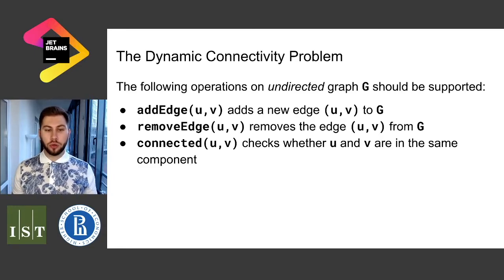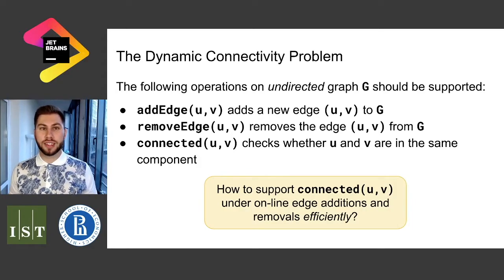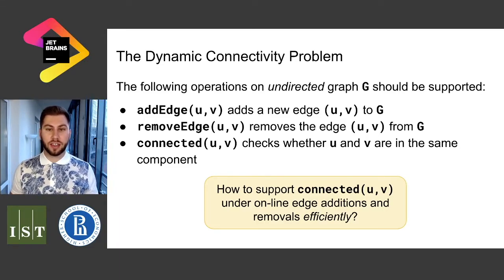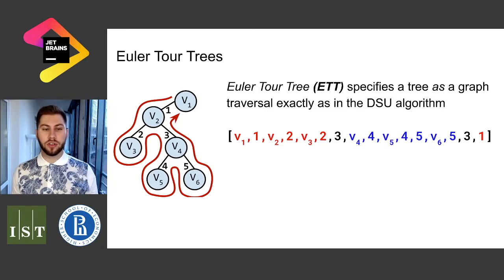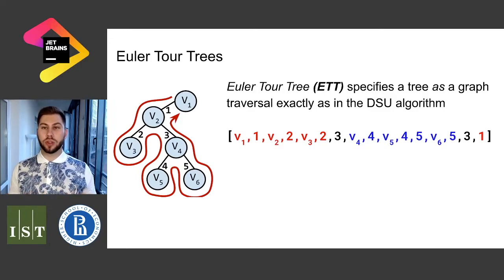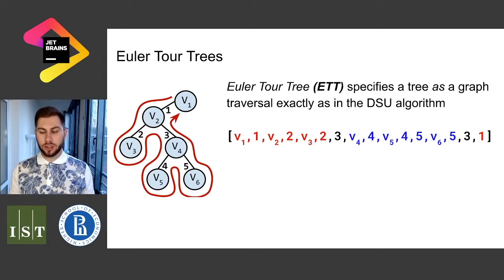We want to perform these connectivity checks under edge additions and removals, and the question is how to do this efficiently in a concurrent scenario. We start with the classic Euler Tour Tree structure, which represents a tree as a graph traversal, exactly as in the classic DSU graph algorithm. Take a look at the graph on the left and the traversal presented in the center — that's exactly what I mean, and we can store this traversal in some balanced tree.